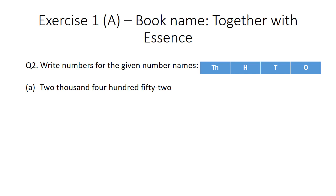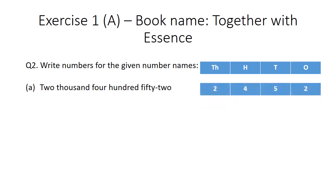Part A: 2,452. Here, with 2,000 is written, so we will write 2 at the thousands place. With 4, hundred is written, so we will write 4 at the hundreds place. And at the tens and ones place, we will write 5 and 2.